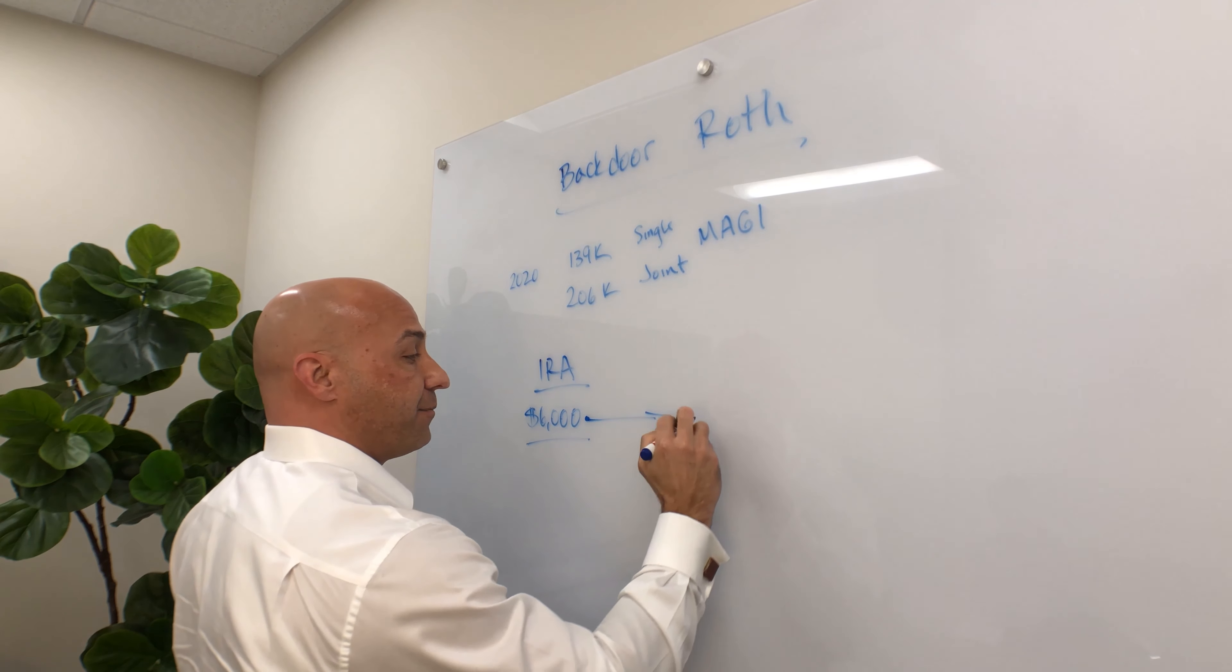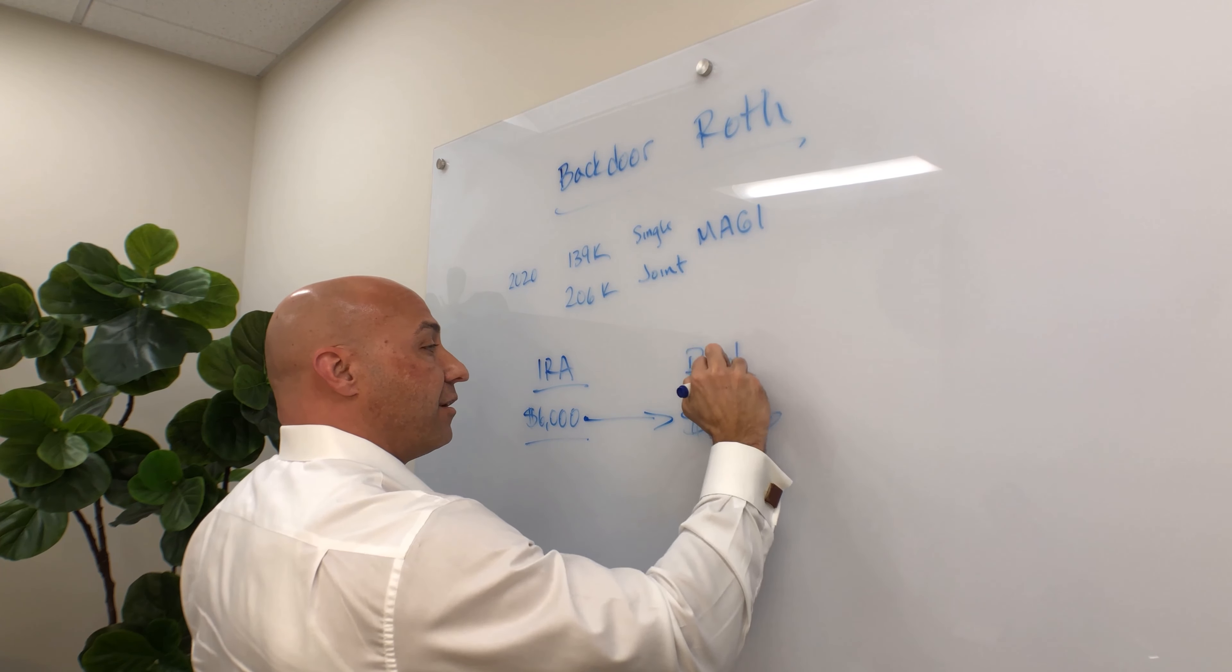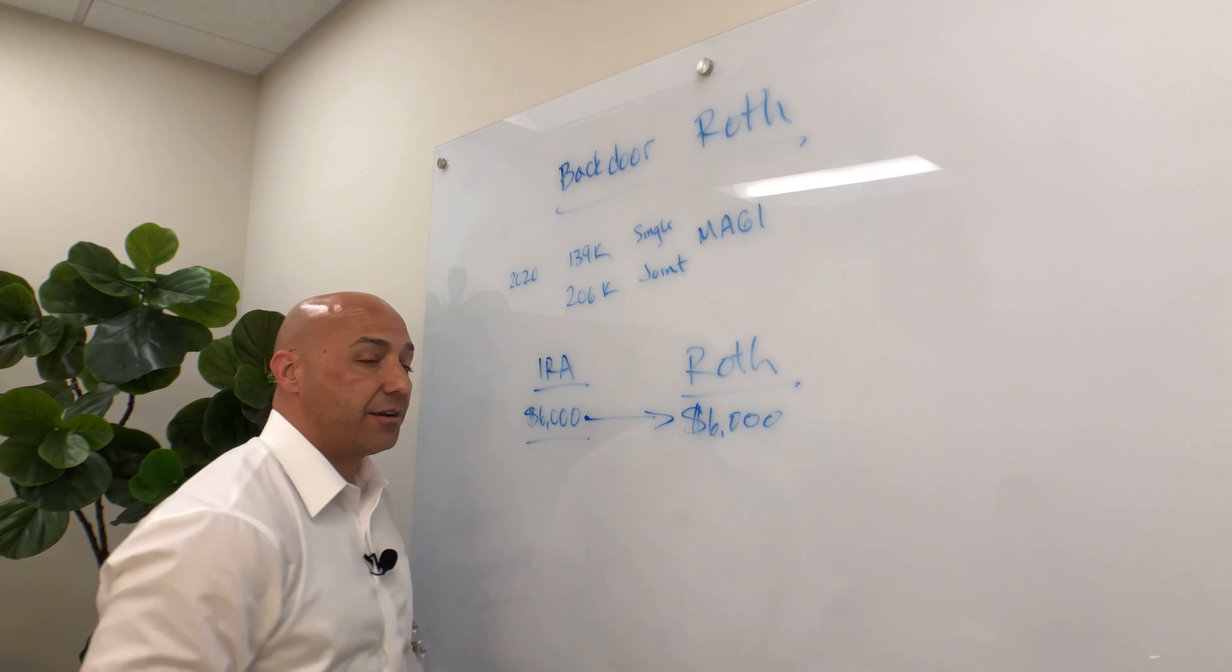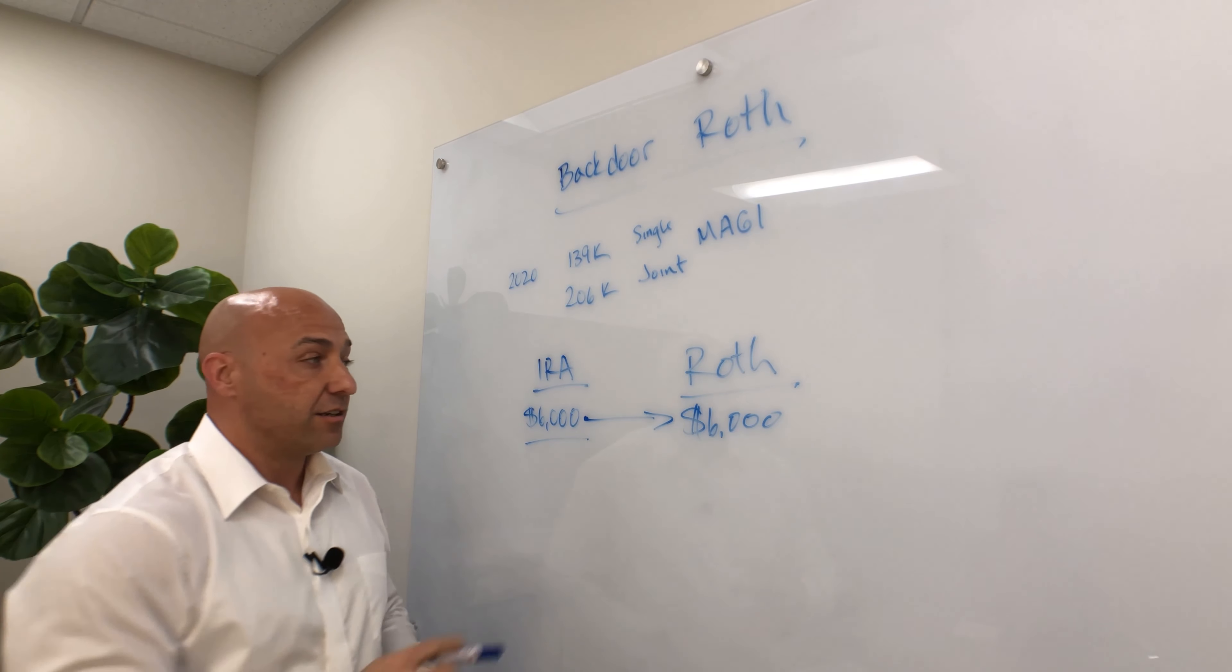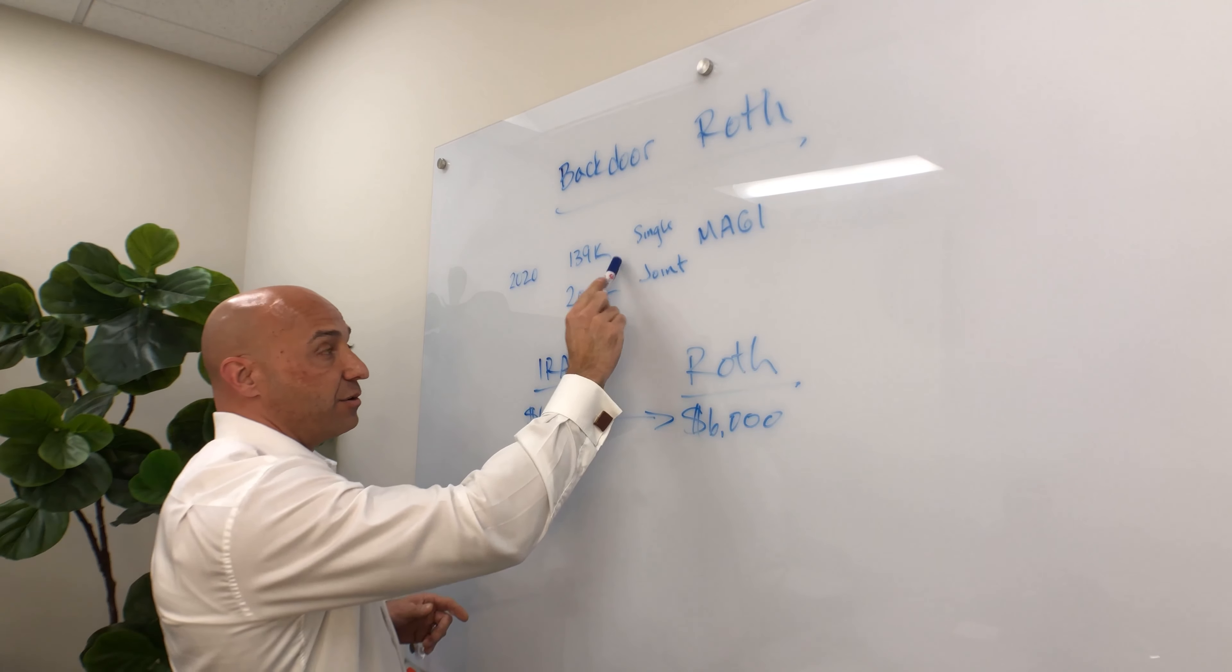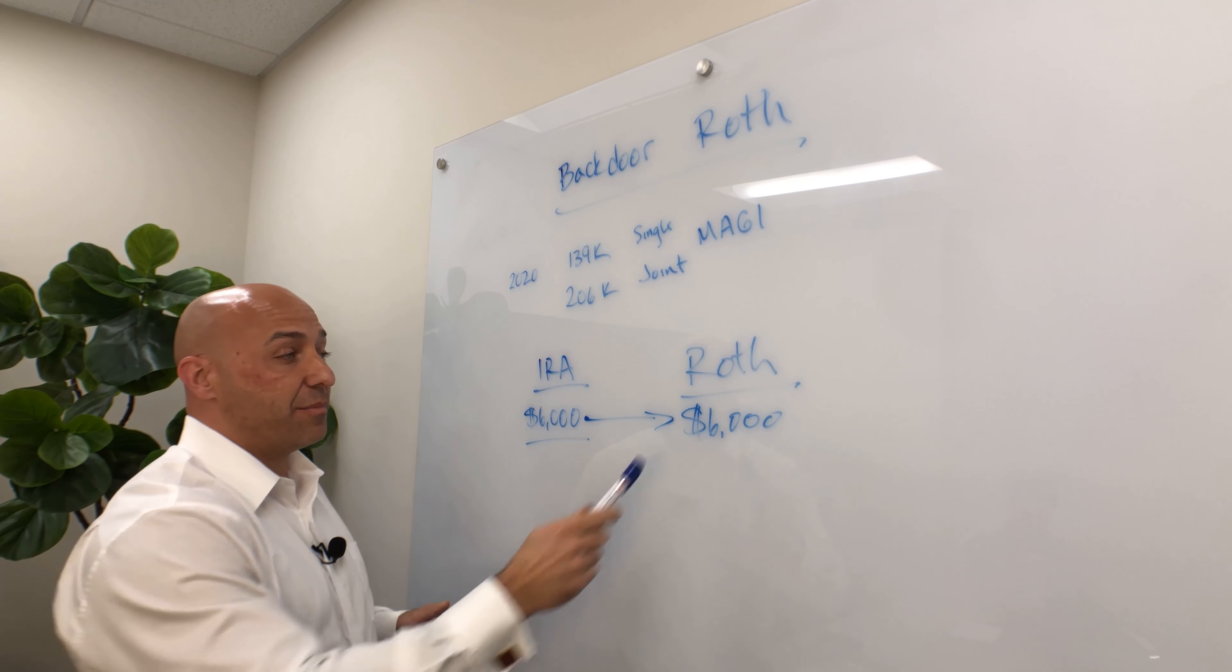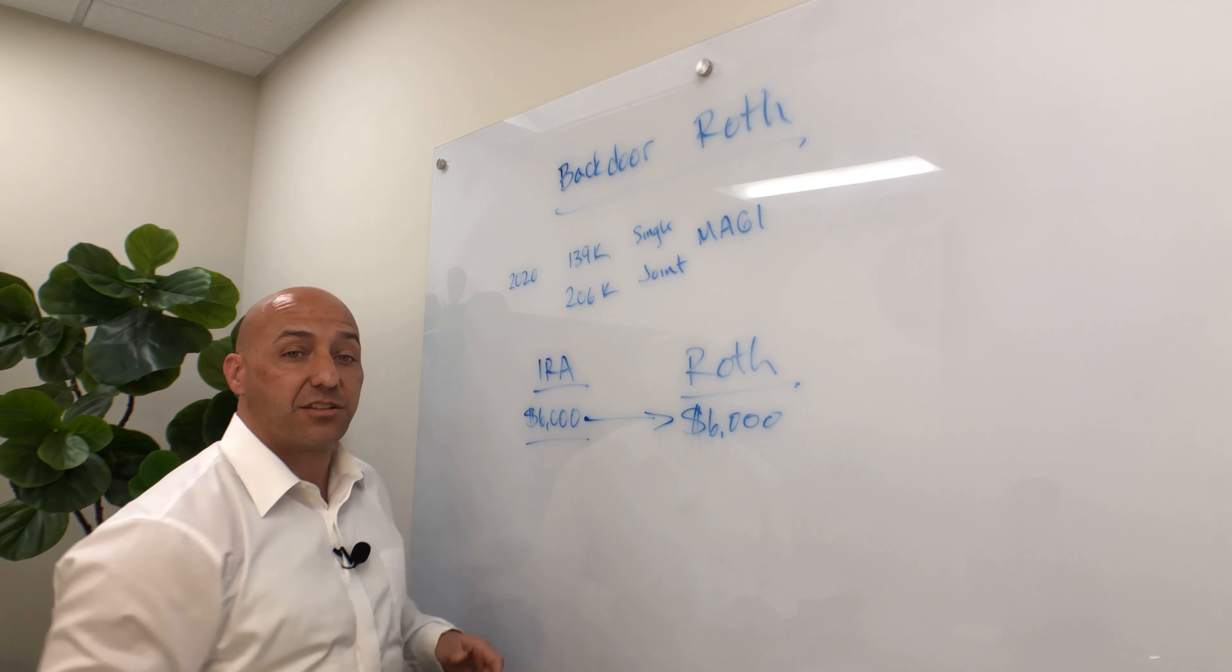And then what you do is you take that $6,000 and you convert it to your Roth IRA. You have essentially just made a Roth IRA contribution, even though you had income that was more than what's allowed to make a Roth contribution. You just had to take two steps to get there.